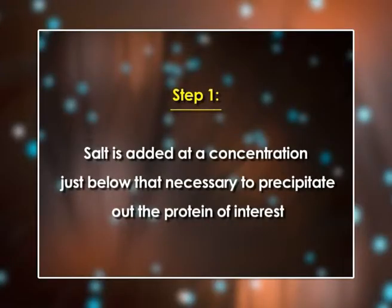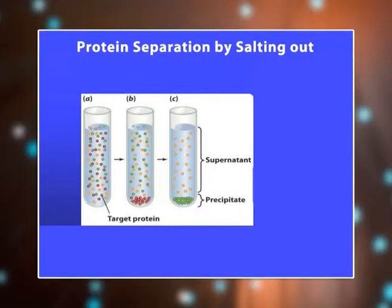Generally, a two-step procedure is used to maximize separation efficiency. In the first step, the salt is added at a concentration just below that necessary to precipitate the protein of interest. The solution is then centrifuged to remove any proteins that are less soluble. The salt concentration is then increased to a point just above that required to cause precipitation of the protein of interest, which can then be separated by centrifugation while more soluble proteins remain in solution.